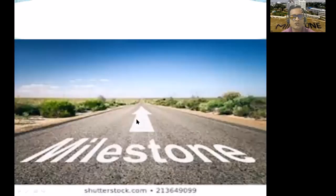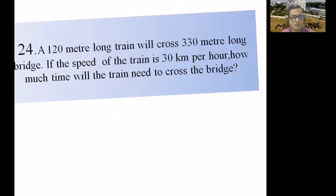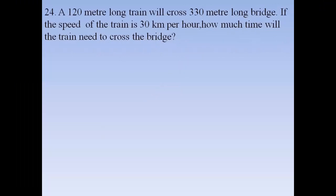Today's problems are numbers 24 and 25 from Exercise 2.3, page 42. Problem 24a: A 120-meter-long train will cross a 330-meter-long bridge. If the speed of the train is 30 kilometers per hour, how much time will the train need to cross the bridge?